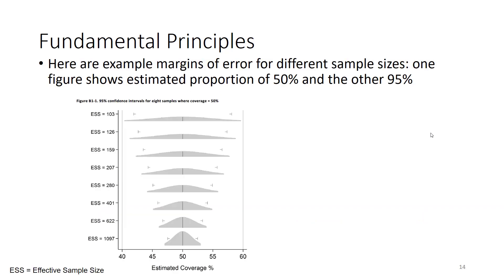Here we illustrate that with some figures. This first figure shows the width of the confidence interval shown in the shading here, the width of the 95% confidence interval based on the effective sample size. So if you interview 103 caretakers and 50% of them say their child was vaccinated, then the 95% confidence interval would go all the way from 40% to 60%.